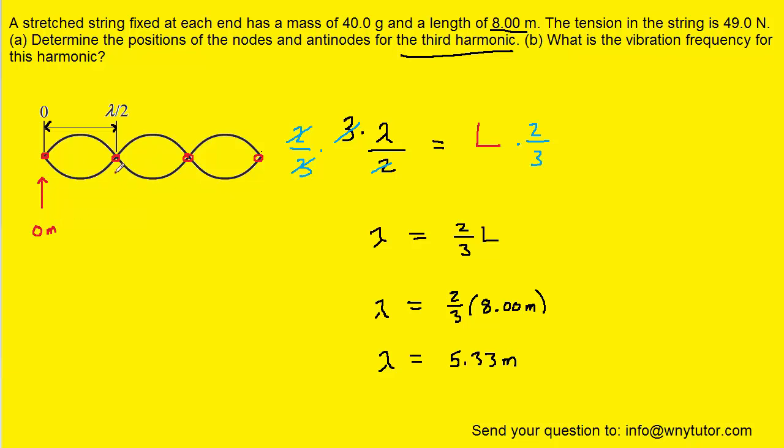The second node is located at that half of a wavelength, so we would have to take the wavelength that we discovered, and basically divide it by two. And when we do that, we can see that the position of that second node is at 2.67 meters approximately.